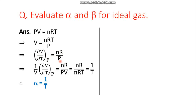Since n, R, and P are constants, del V by del T at constant P results in nR/P. To find alpha, this is divided by total volume V, giving nR/(PV). For an ideal gas, PV = nRT, so substituting: nR/(nRT), and nR in the numerator cancels with nR in the denominator, resulting in 1/T. So the thermal expansion coefficient of an ideal gas is always 1/T.